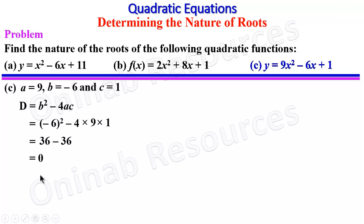Since the discriminant is 0, therefore the roots are real and equal, which means it has only one real root.